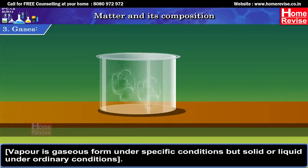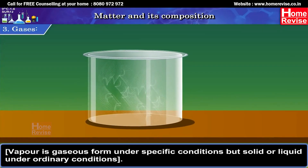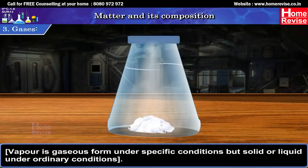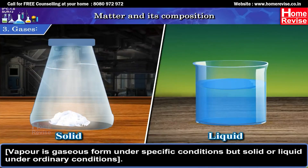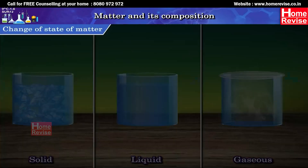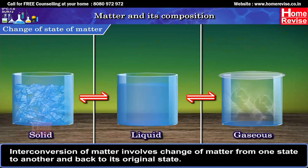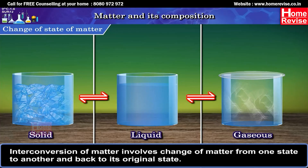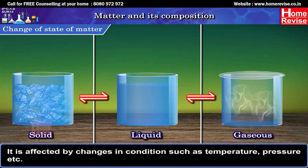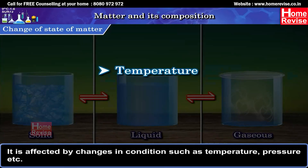Vapour is the gaseous form under specific conditions but solid or liquid under ordinary conditions. Change of state of matter: Interconversion of matter involves change of matter from one state to another and back to its original state. It is affected by changes in conditions such as temperature, pressure, etc.